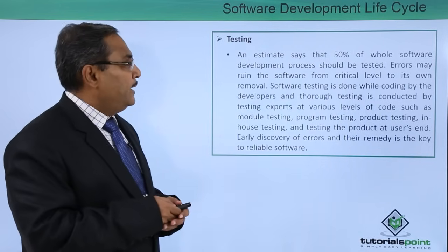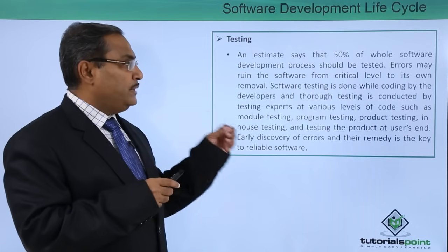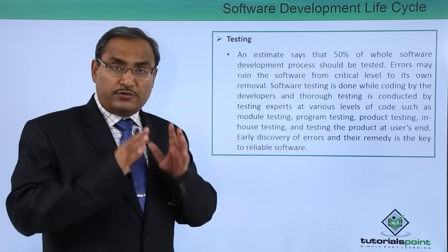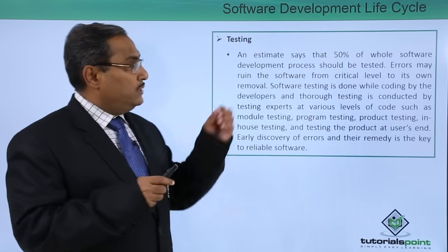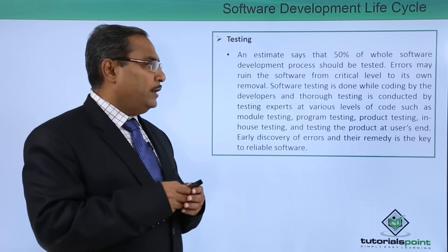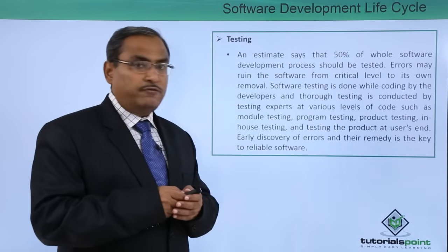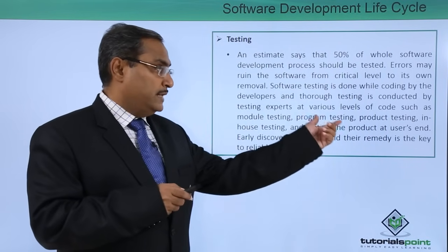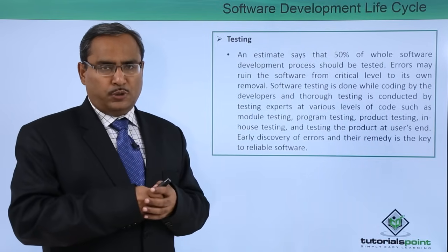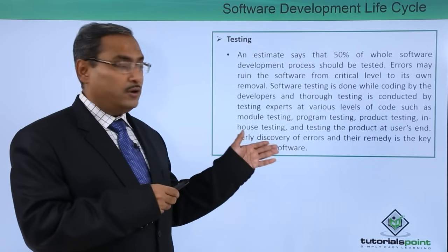Next is testing. An estimate says that 50% of the whole software development process should be dedicated to testing, as errors can ruin the software from a critical level to its removal. Software testing is done while coding by developers, and thorough testing is conducted by testing experts at various levels — module testing, program testing, product testing, in-house testing, and testing at the user's end. A separate chapter in the tutorial covers software testing in further detail.